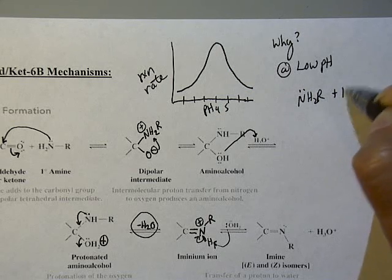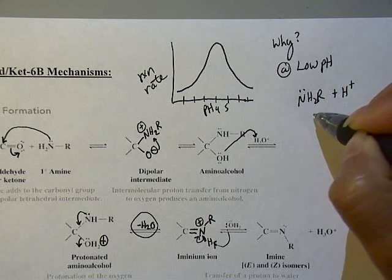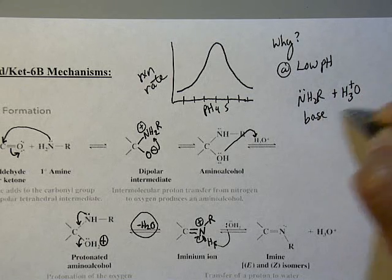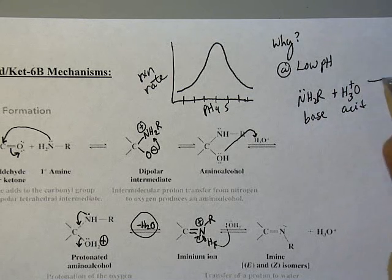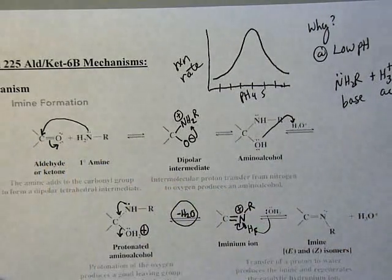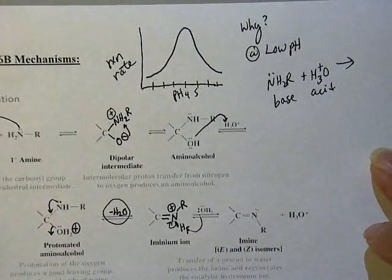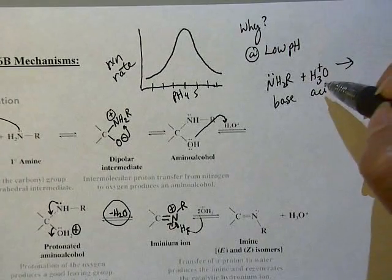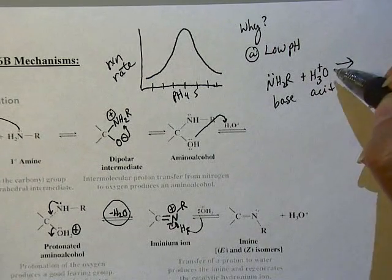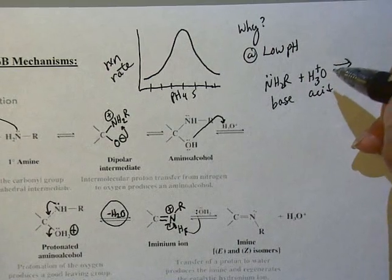At low pH in which a lot of acid is around, the amine is going to react with the acid in an acid-base reaction. This is going to serve as base, this is acid. So rather than doing the nucleophilic attack of the carbonyl which it's supposed to, it's now getting sidetracked.